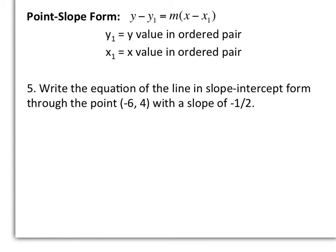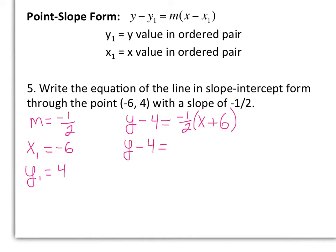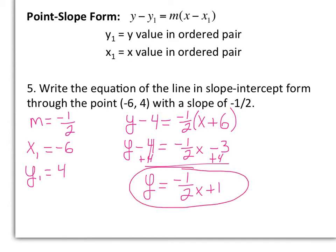So in number 5, we want to write the equation of the line in slope-intercept form through the point negative 6, 4 with a slope of negative 1 half. So over on the side, I'm just going to identify what I have. I have a slope, I have an x1 value, and I have a y1 value. And then using the formula, I'm going to plug in what I know. So I'll have y minus my y value equals my slope times x minus my x value, but that's going to turn into a plus 6 since our 6 is negative. Then solve for y, first distributing on the right, and then adding 4, so I get y equals negative 1 half x plus 1, and that is my linear equation in slope-intercept form that has a slope of negative 1 half and goes through the point negative 6, 4.